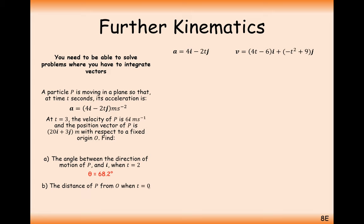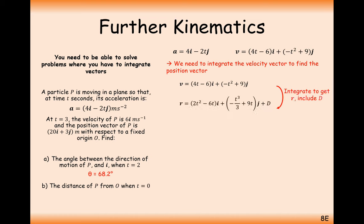Part B: find the distance of P from O when t equals 0. This requires another integral — we integrate velocity to get position. A different letter D is used to distinguish from the earlier constant C. Integrating each component separately gives the expression for position, and we use a different letter to represent this new constant of integration.